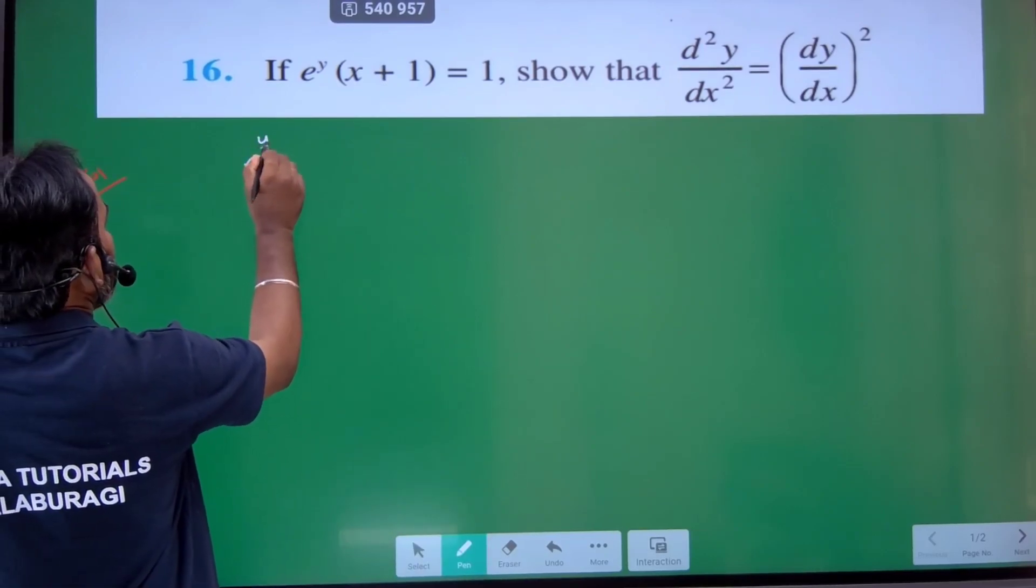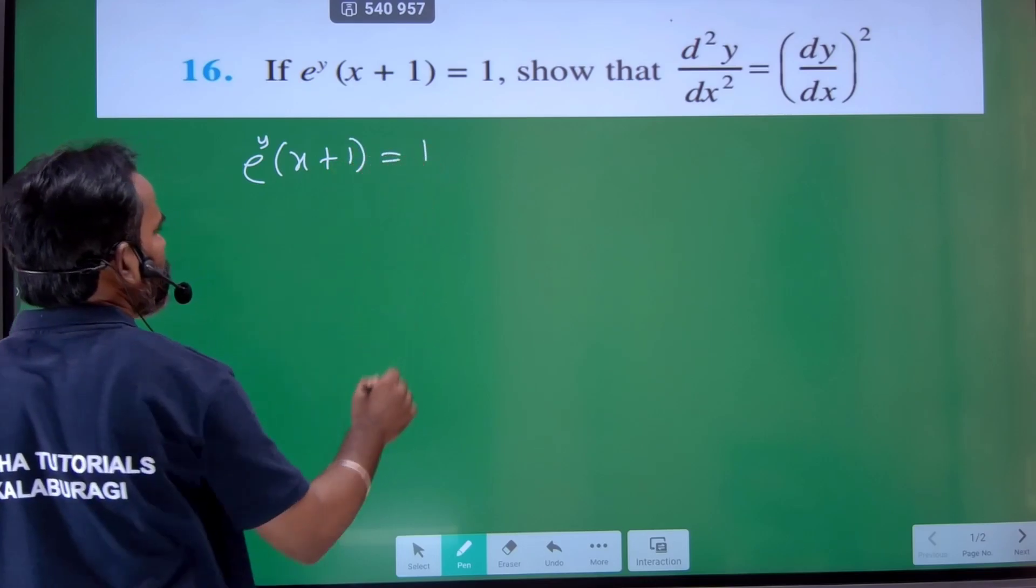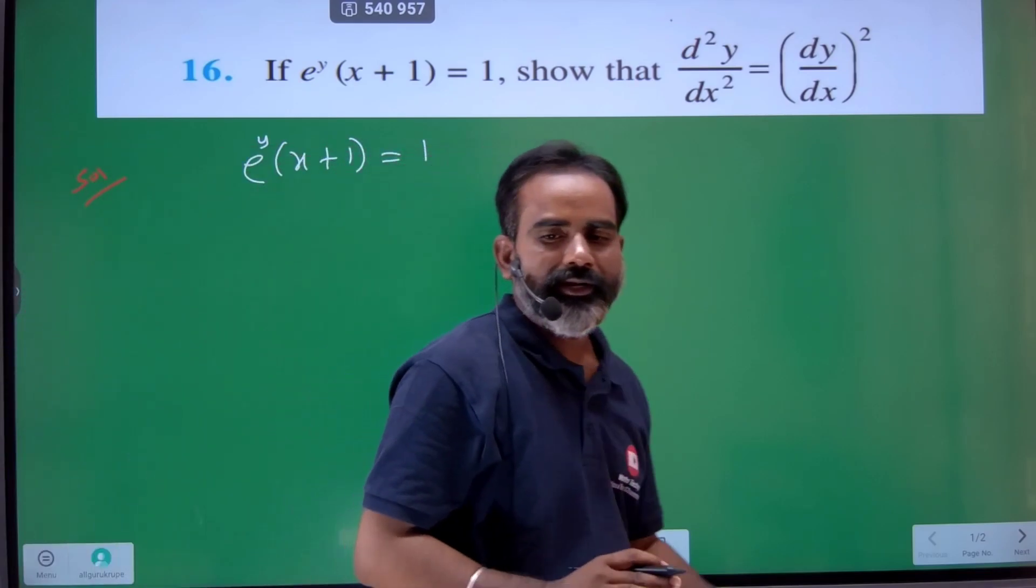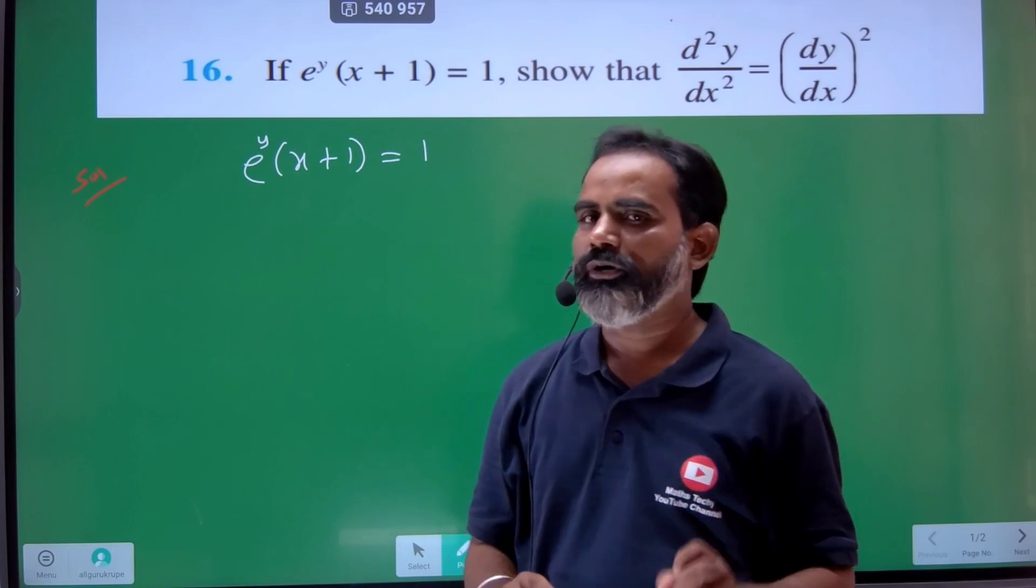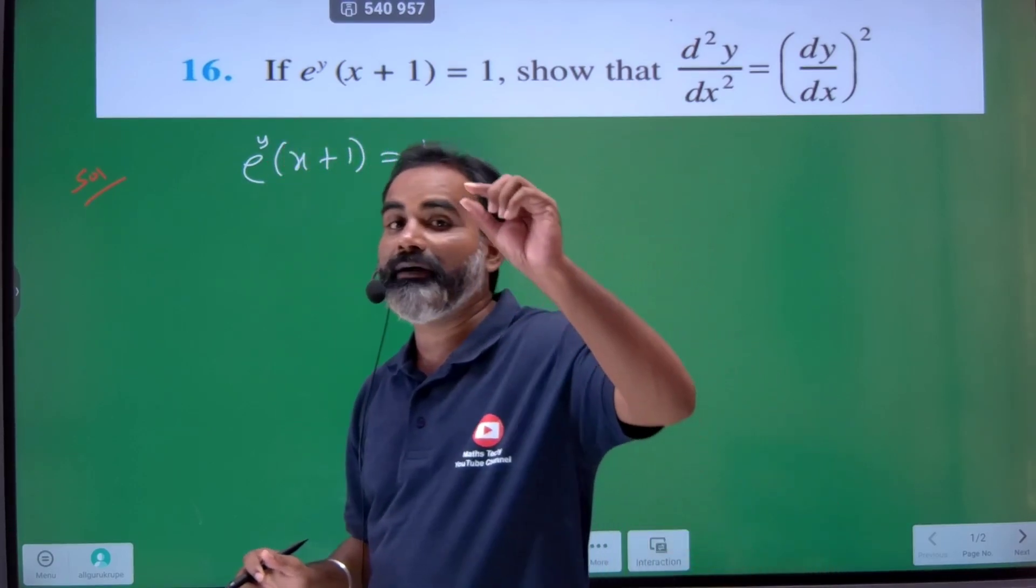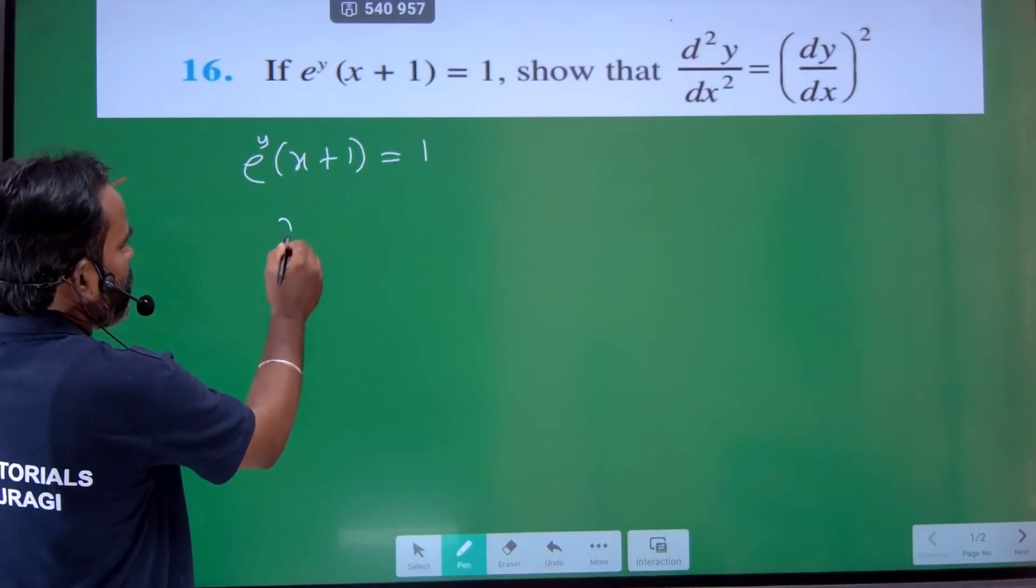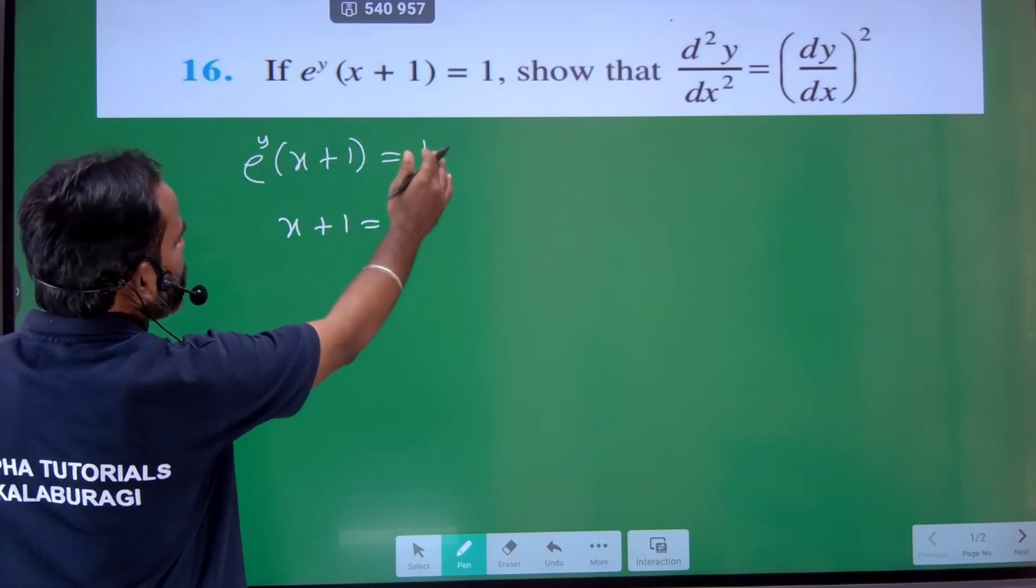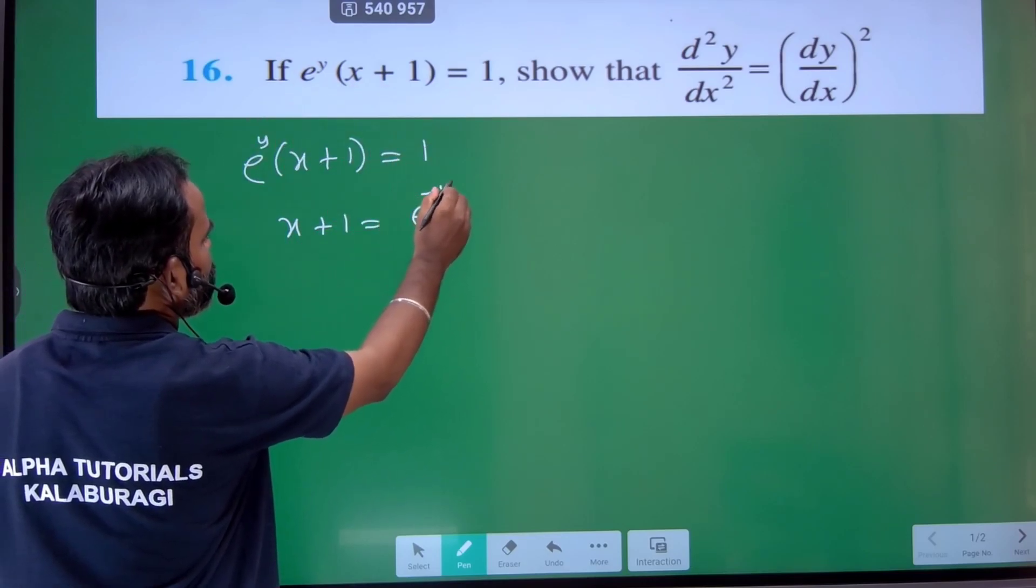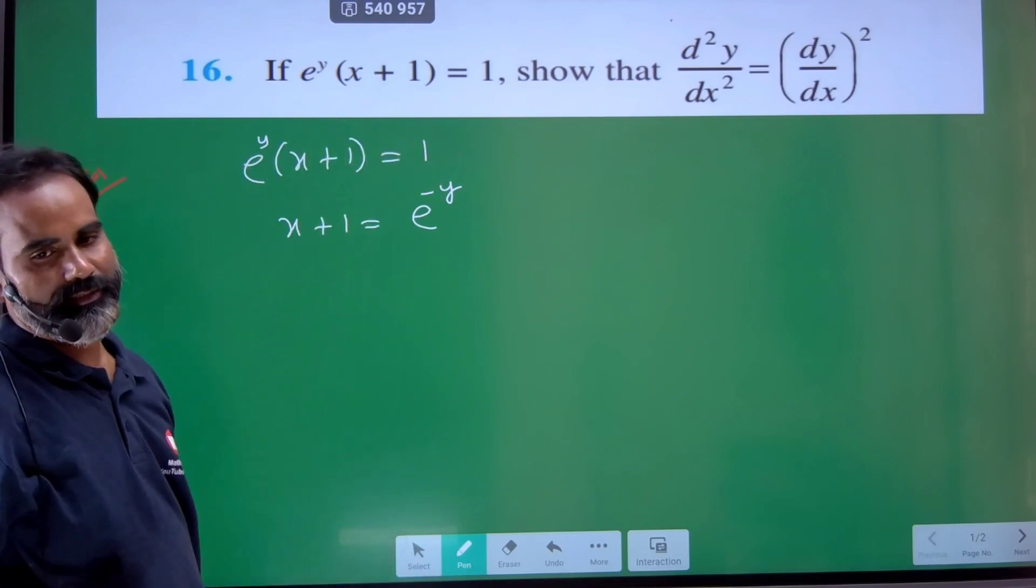Given: e to the power of y times (x plus 1) equals 1. So directly differentiation is better. e to the power of y equals e to the power of minus x.